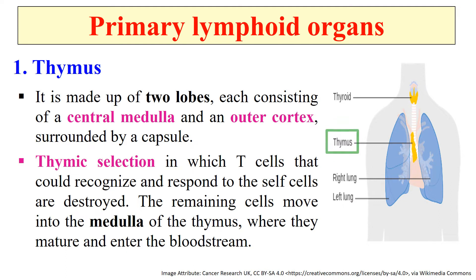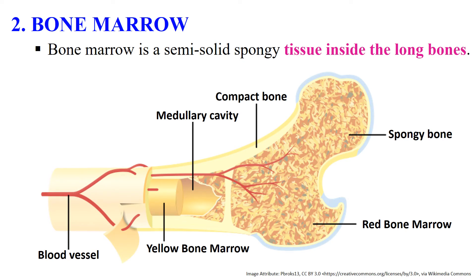These T cells recognize and respond to a variety of foreign cells, also known as non-self substances. So, in the thymus, T lymphocytes mature. The second primary lymphoid organ is bone marrow. It is a semi-solid spongy tissue found inside the long bones and contains stem cells. The stem cells can develop into red blood cells, white blood cells, and platelets. B lymphocytes mature in the bone marrow. Bone marrow is formed of yellow bone marrow and red bone marrow — a spongy type of tissue present in long bones like the femur.